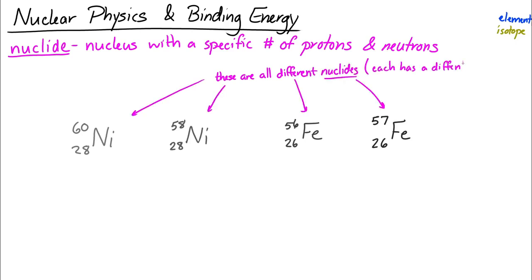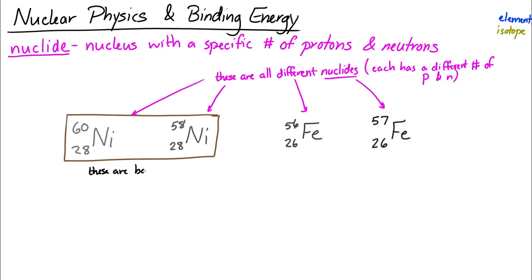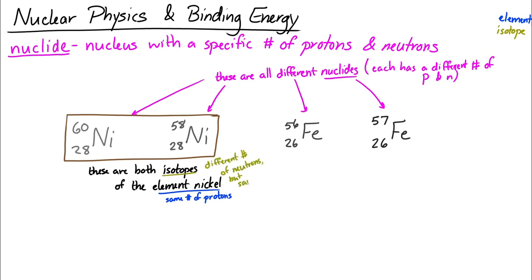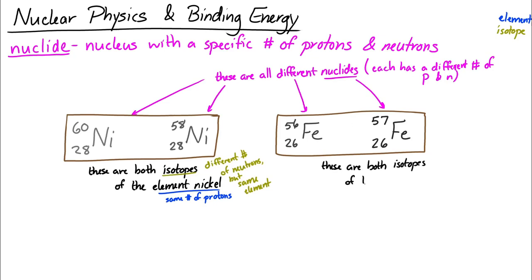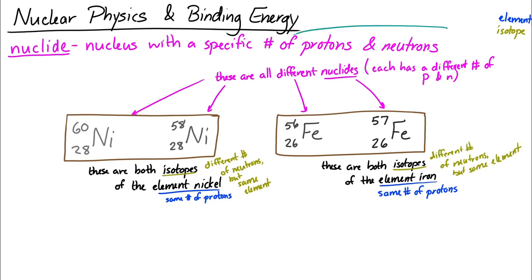They're different nuclides because each has a different number of protons and neutrons. For the two nickels, these are isotopes of the element nickel — they're both nickel because they have the same number of protons, but they're isotopes because they have different numbers of neutrons. Likewise, iron-56 and iron-57 are both isotopes of the element iron, differing in their number of neutrons.